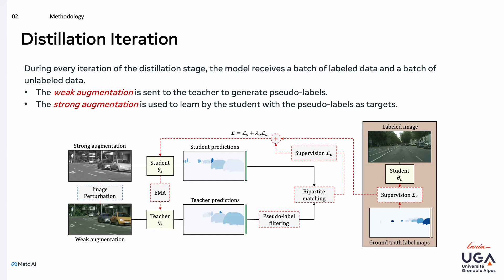If we look at what happens within a training iteration, we can see the teacher predictions on the weakly augmented image are filtered to provide a set of pseudo-labels. These are then matched using bipartite matching with the predictions of the students from the strongly augmented image. They will further serve to supervise the unlabeled training loss that is calculated similarly to the supervised loss. The overall training loss is a weighted sum of the two terms.